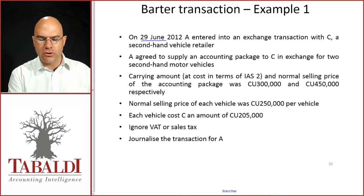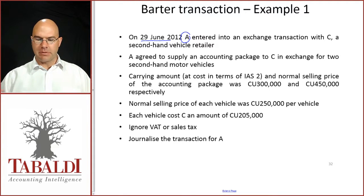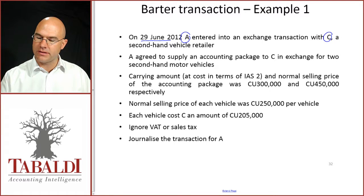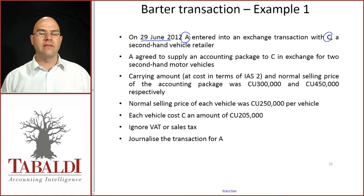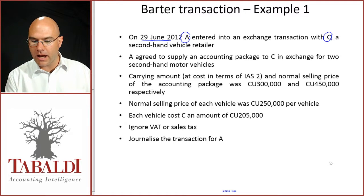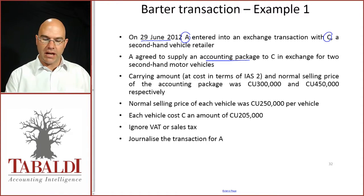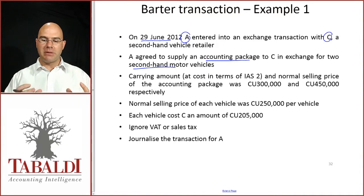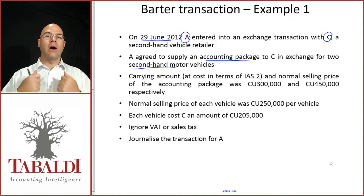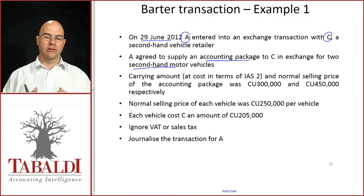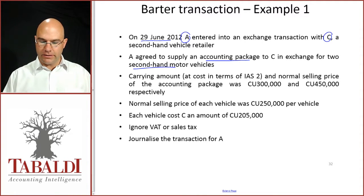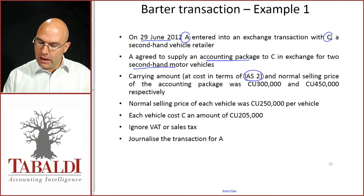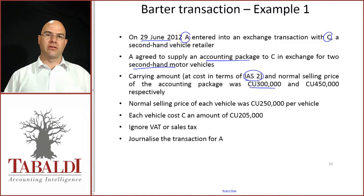On the 29th of June 2012, A, the company, entered into an exchange agreement with the counterparty C, and C was a second-hand vehicle retailer. A agreed to supply an accounting package to C in exchange for two second-hand motor vehicles. So A, that's us — we are the company that does accounting packages. The carrying amount, in terms of IAS 2, i.e. inventory, of the accounting package was based on cost of $300,000.